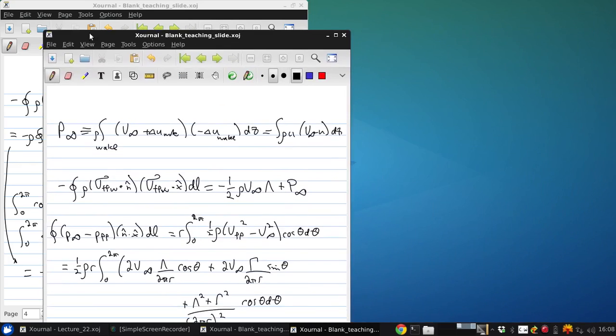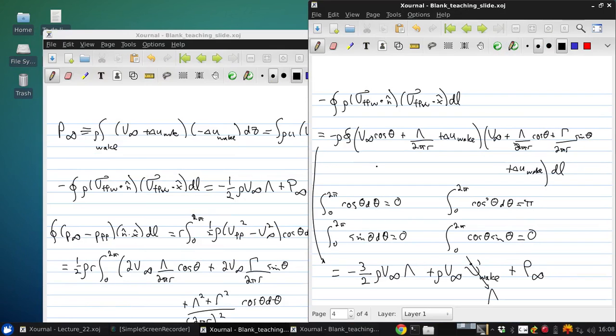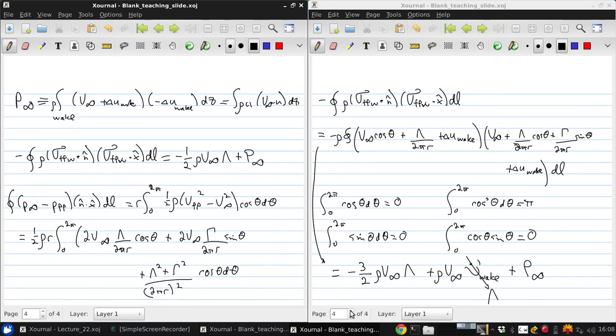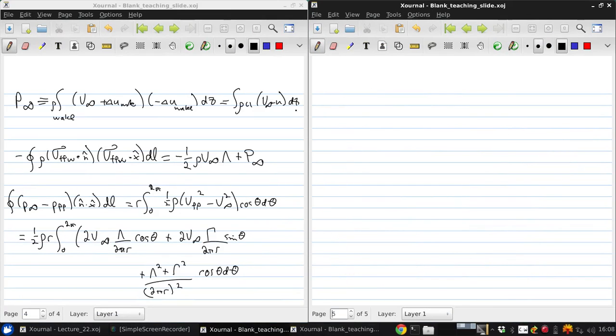And while that looks complicated, using these integral simplifications, we can get that this is simply equal to rho V infinity lambda over 2.